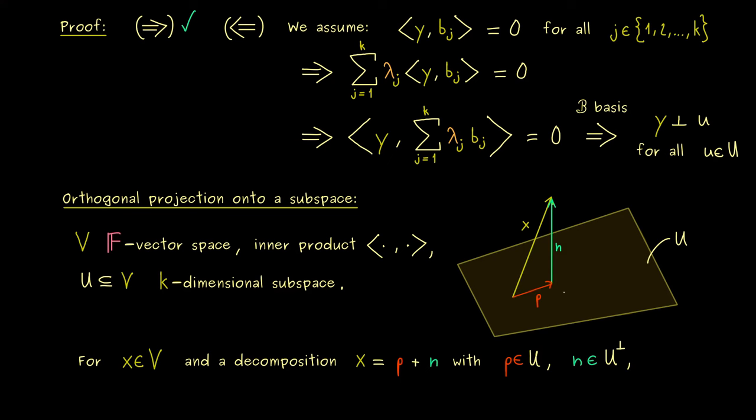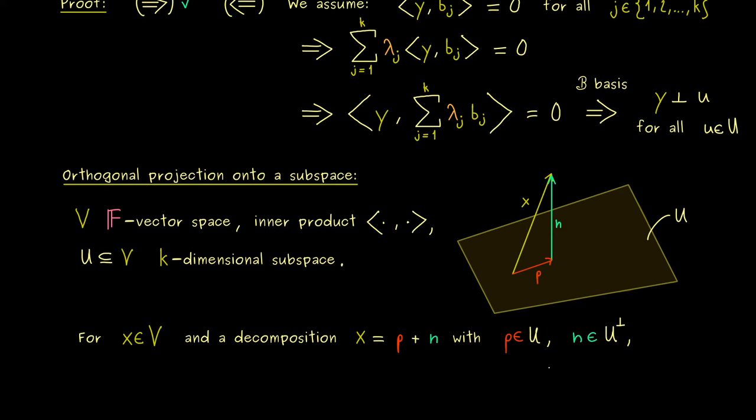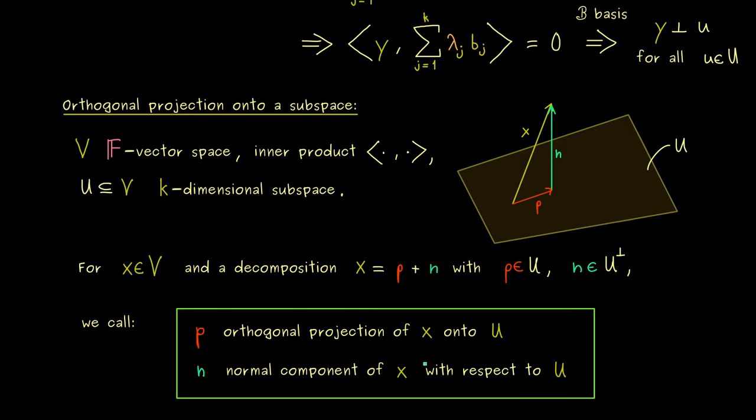And then the names we have for these two components are still the same from the one dimensional case. p is the orthogonal projection of x onto U and n is the normal component of x with respect to our subspace U. We have already mentioned that the proof for the uniqueness of such a composition is the same as last time.